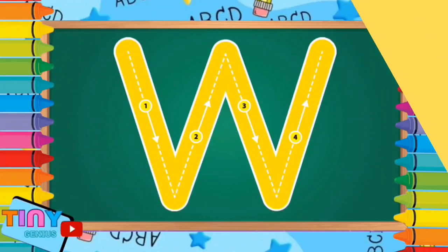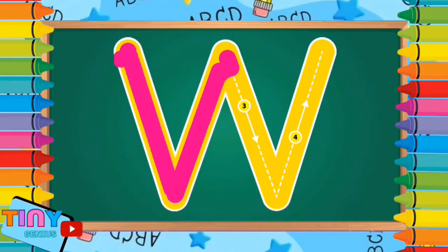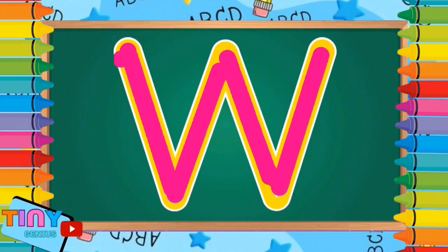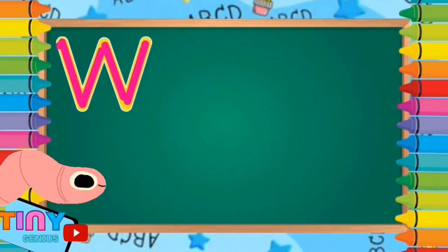The next letter is W. Slant down, slant up, slant down, slant up. W is for worm.